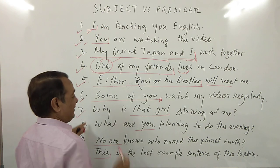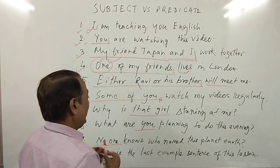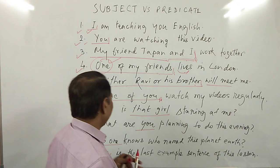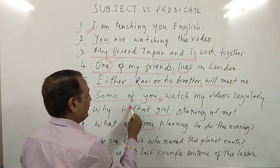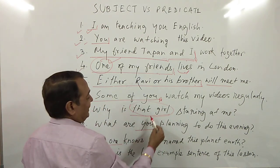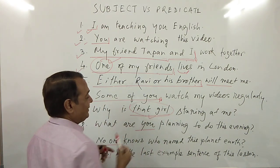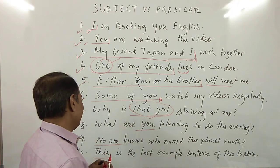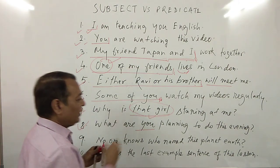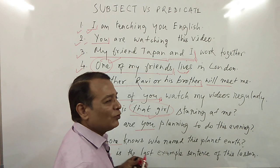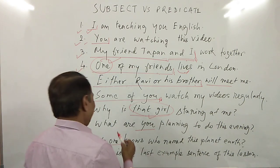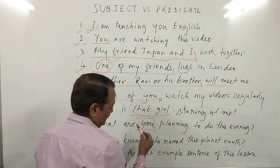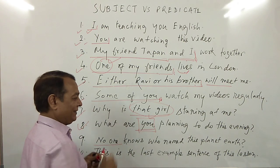Number seven is a question: 'Why is that girl staring at me?' I am talking about that girl in this sentence. That's why the subject is 'that girl.' Number eight: 'What are you planning to do this evening?' Here, I am talking about you, and that's why the subject is 'you' in this sentence.